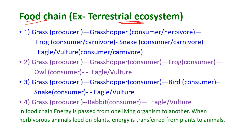Let us look at the terrestrial ecosystem as an example for a food chain. In the first food chain: eagle eats snake, snake eats frog, frog eats grasshopper, and grasshopper eats grass.